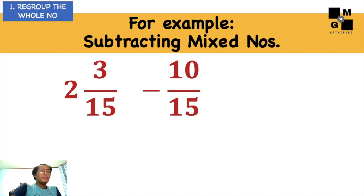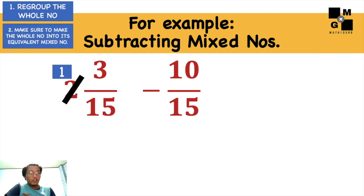How do we regroup? Regroup the whole number again. So these 2 will become 1. And then you have to make the other one a fraction, and we will make use of 15 over 15.